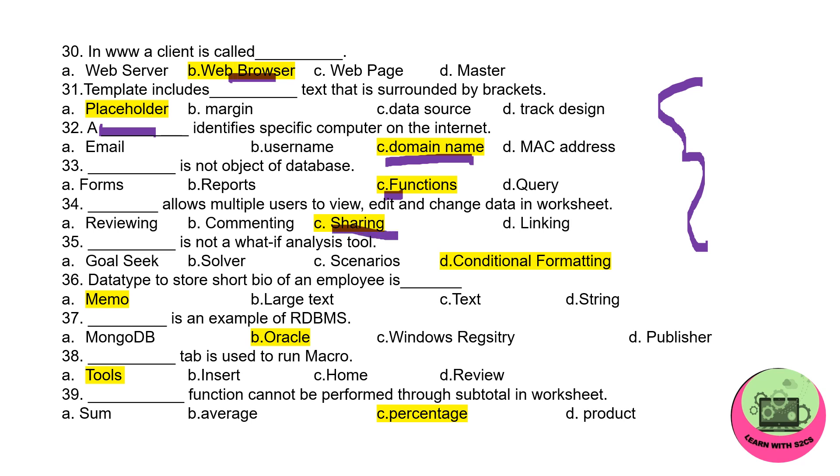If you share the worksheet, if you're giving the permission to others, they can view the sheet, they can edit the sheet, they can make the changes in the sheet. Next: it's not a what-if analysis tool, so Conditional Formatting is not a what-if analysis tool. Data type to store short bio of an employee is memo. One more thing you can remember about memo: it holds up to 64,000 characters. Dash is an example of RDBMS, so Oracle is an example of RDBMS.